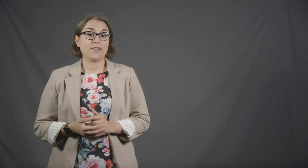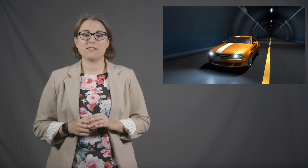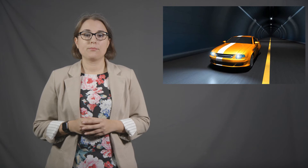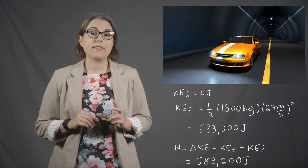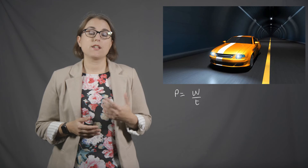Compare that to a sports car with a mass of 1600 kilograms that speeds up from rest to 27 m/s in three seconds. The work is equal to one-half × 1600 × (27)² = 583,200 joules. Dividing by 3 seconds gives a power of 194,400 watts. In case we needed mathematical evidence, a sports car is way more powerful than a golf cart.